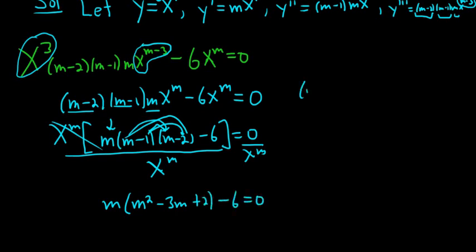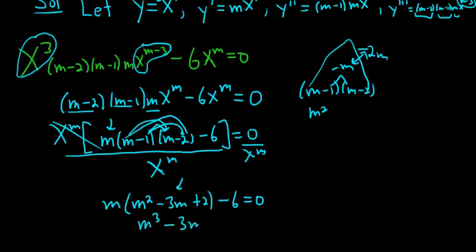So m times m is m². And then the inside is -m. The outside is -2m. When you add those, you get -3m. Now we can distribute the m. So we get m³ - 3m² + 2m - 6 = 0.